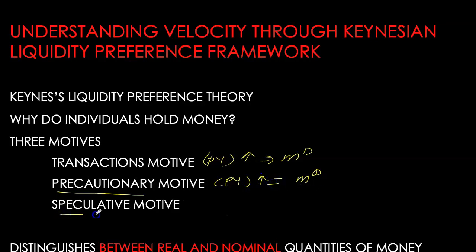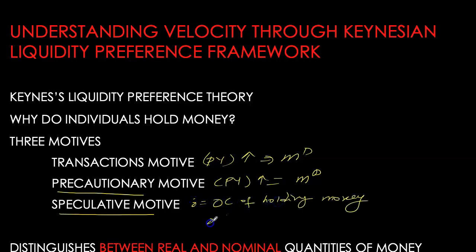The speculative motive treats money as part of your portfolio of wealth. When you hold money, you are taking away funds from some alternative asset which is giving you a return. So the interest rate is the opportunity cost of holding money — higher the interest rate, lower will be the demand for nominal money balances.